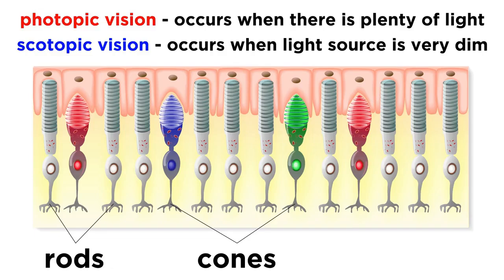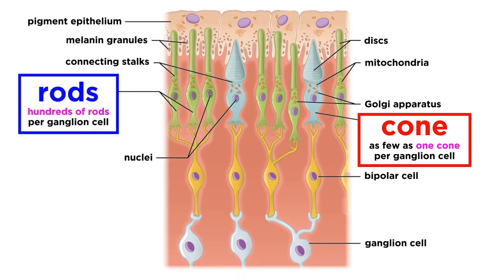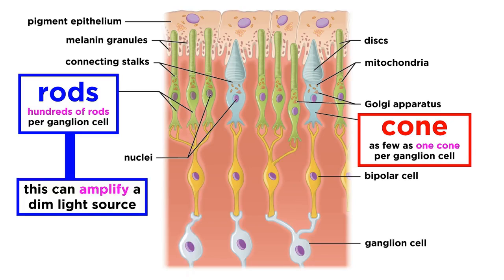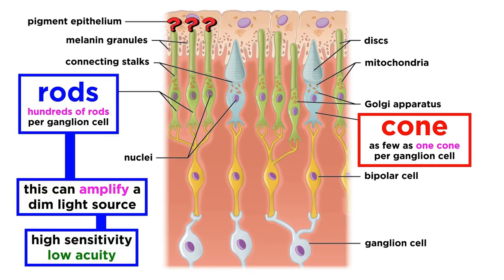This is better understood when looking at how these neurons converge. With cones, only a few converge onto one retinal ganglion cell, so the input received is from just a few photoreceptors. By contrast, several hundred rods converge onto a single retinal ganglion cell, so the input is from a great many photoreceptors. This is why rods can take a very dim light source and amplify the stimulation, whereas this would not work with cones. This system trades sensitivity for acuity, because an amplified signal means the information will be received, but it can't be pinpointed to a single rod, so it is less clear where the signal is coming from.